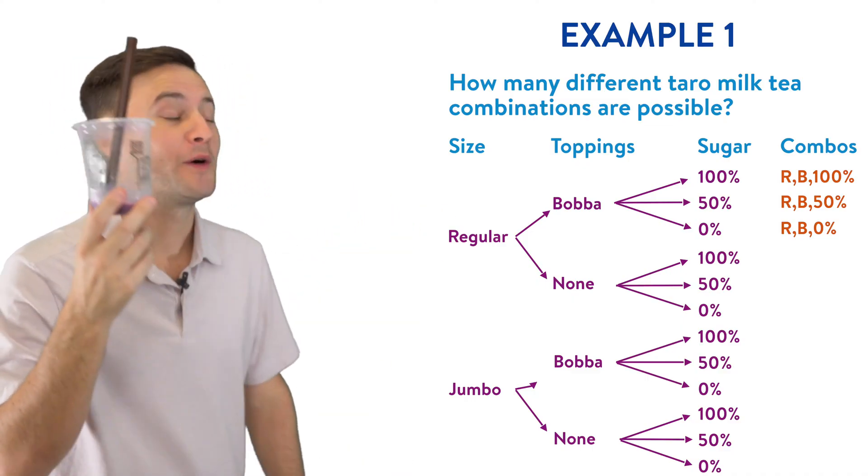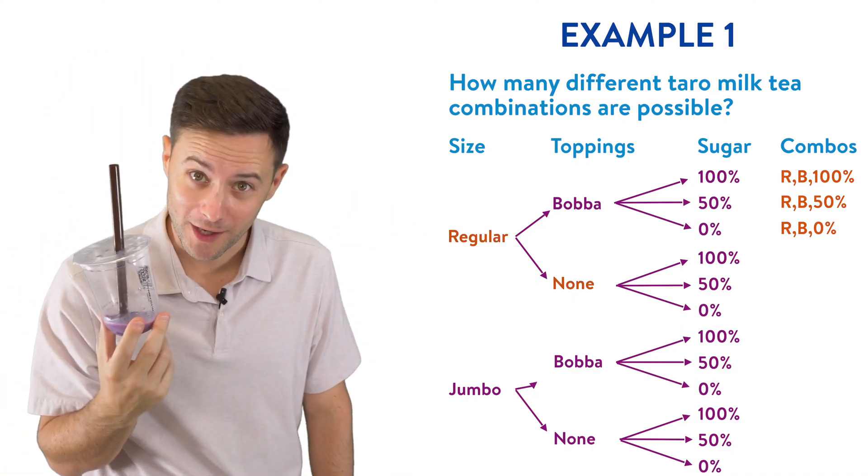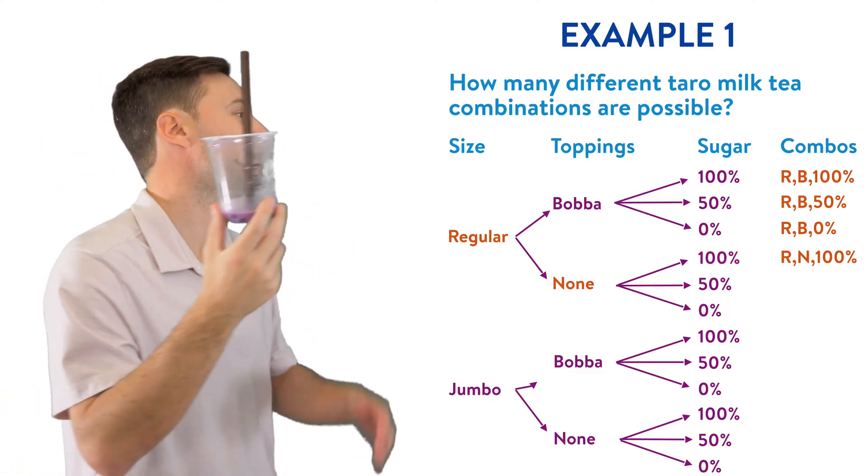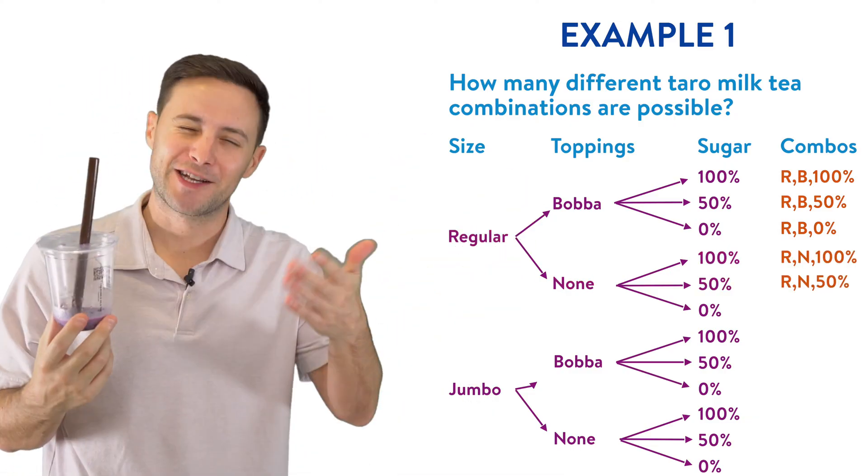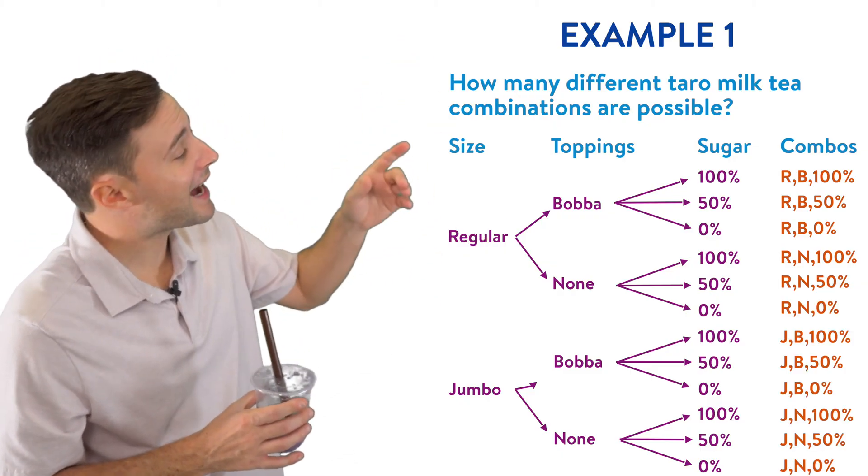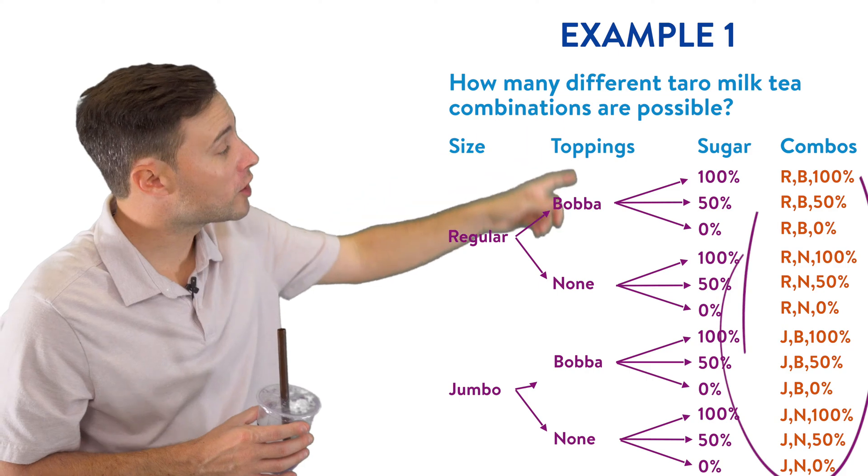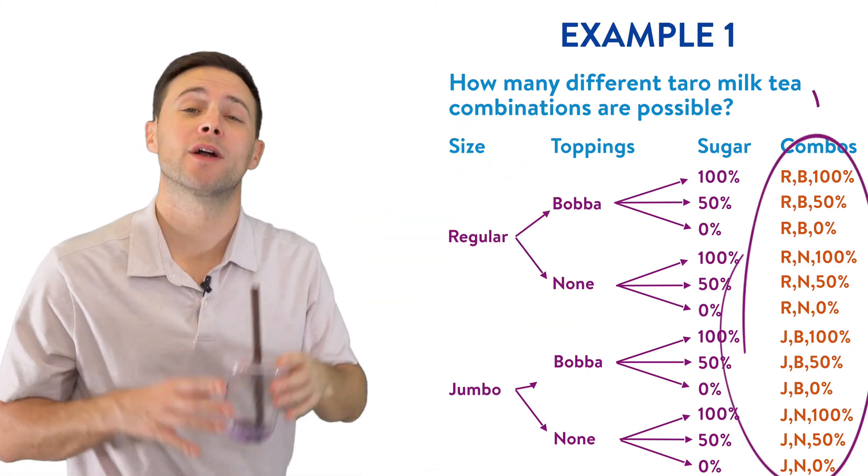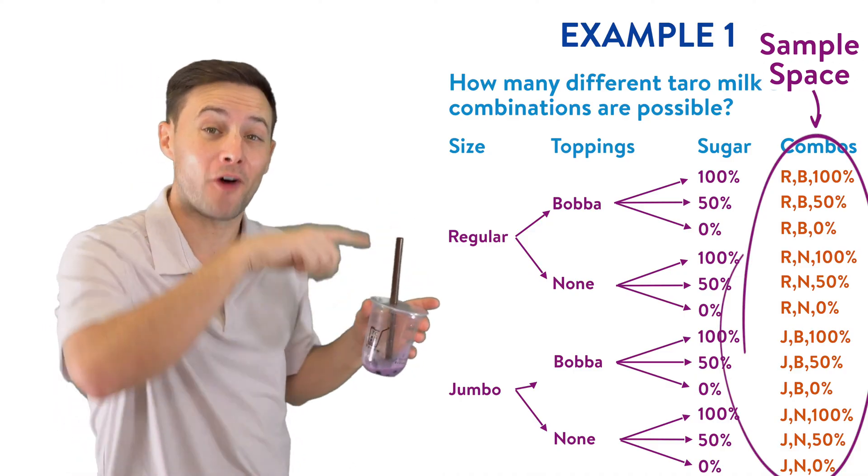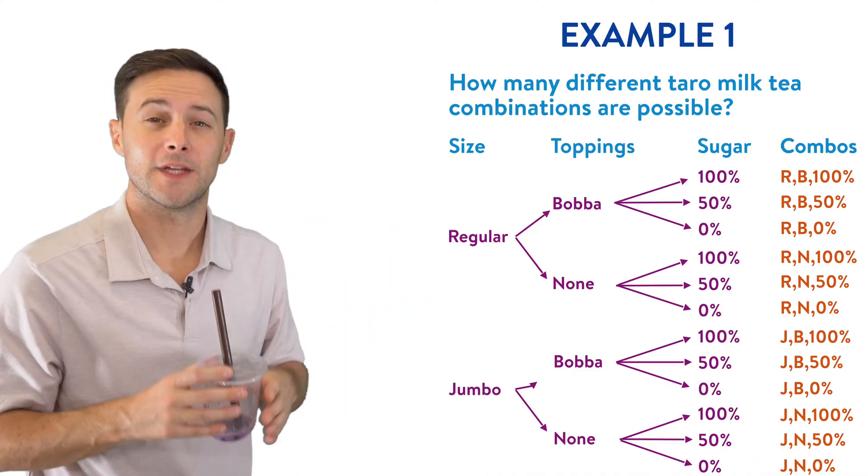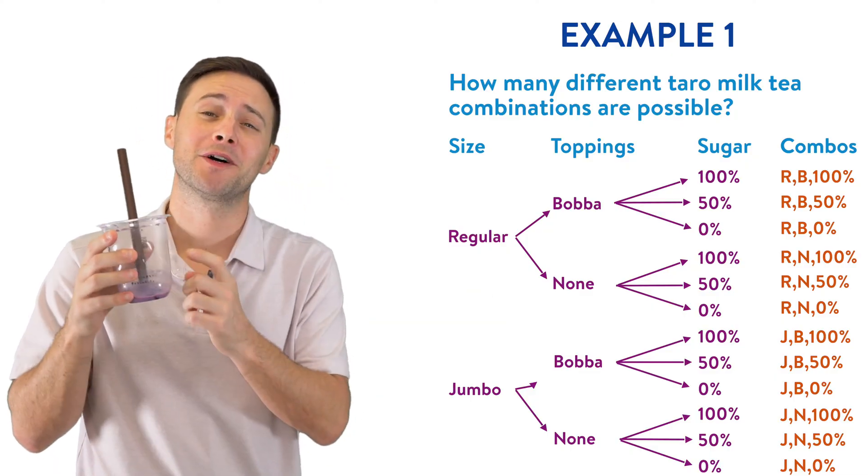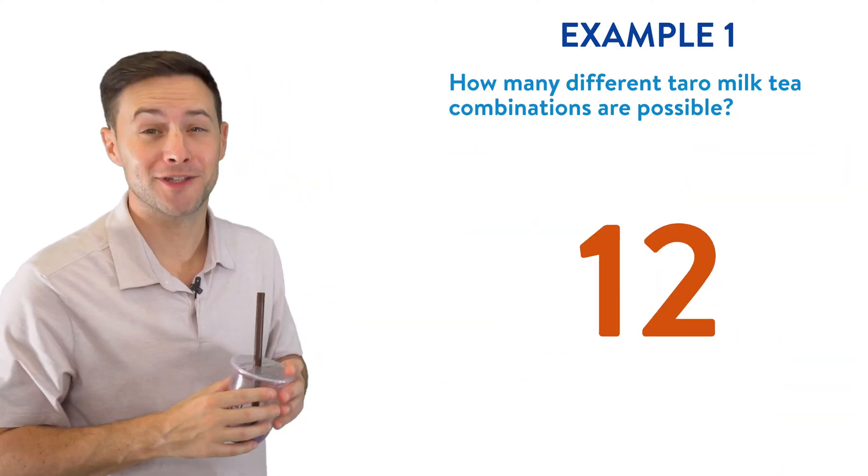Next, we could go regular, no boba, and 100% sugar. Regular, no boba, and 50% sugar. You kind of get where I'm going. So let's fill in the rest of the combinations, and now you can see all of those make up our sample space. The sample space is the set of all of those possible outcomes. And so now we're ready to answer our question. How many different taro milk tea combinations can we make? It looks like we can make 12.